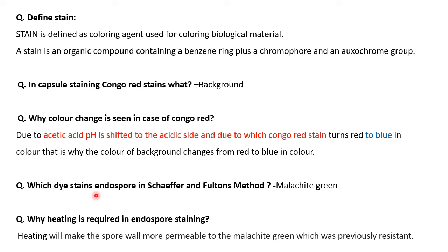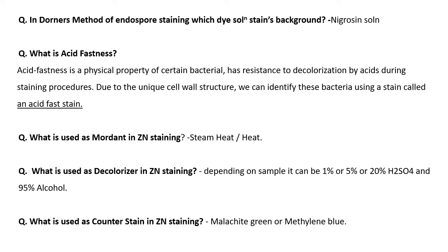Next are questions from endospore staining. In Schaeffer-Fulton's method, malachite green is the dye which stains the endospore. Why is heating required in endospore staining? Heating makes the spore wall more permeable to malachite green, helping it penetrate, since the spore was previously resistant to the stain. In Dorner's method of endospore staining, nigrosin solution stains the background.